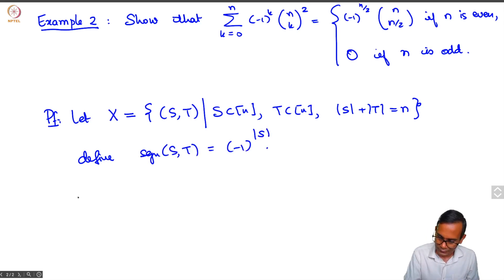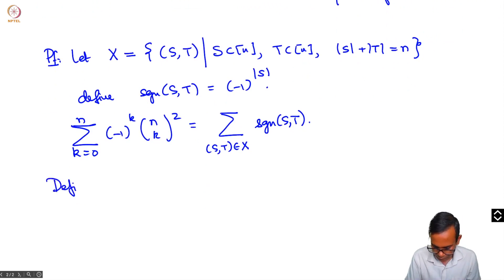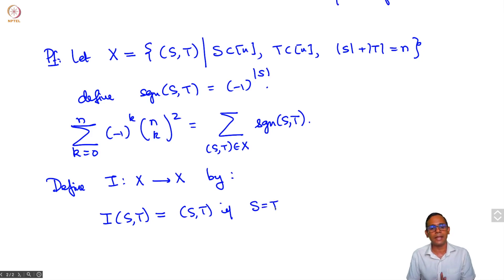What we have is that the left hand side of this identity is the sum over s comma t in x, sign of s comma t. Now let us define an involution as follows: I of s comma t is equal to s comma t if s is equal to t. If s and t are equal, then you take this pair s comma t to be a fixed point of the involution I.